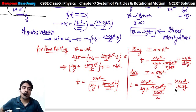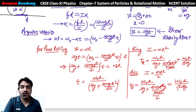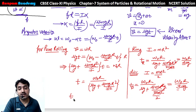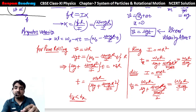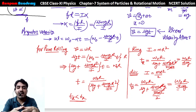Toh konsa time chota hoga - disk ke liye ya ring ke liye? Is ko t_r aur is ko t_d lete hain. Obviously disk ke liye time chota hoga - t_d < t_r, kyunki denominator mein 3 hai versus 2. So question ka answer yeh hai ki disk jo hai, woh jaldi rolling start karegi. Thank you.